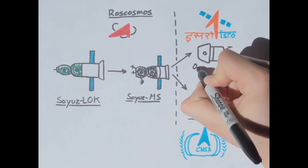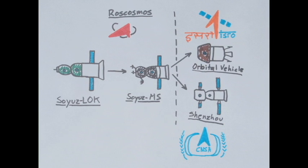If imitation is indeed the sincerest form of flattery, then both China and India have chosen to flatter the Soyuz with either exact replicas or by stealing design elements. Today, the Soyuz and Shenzhou, China's knockoff, are the only craft launching crew to orbit.